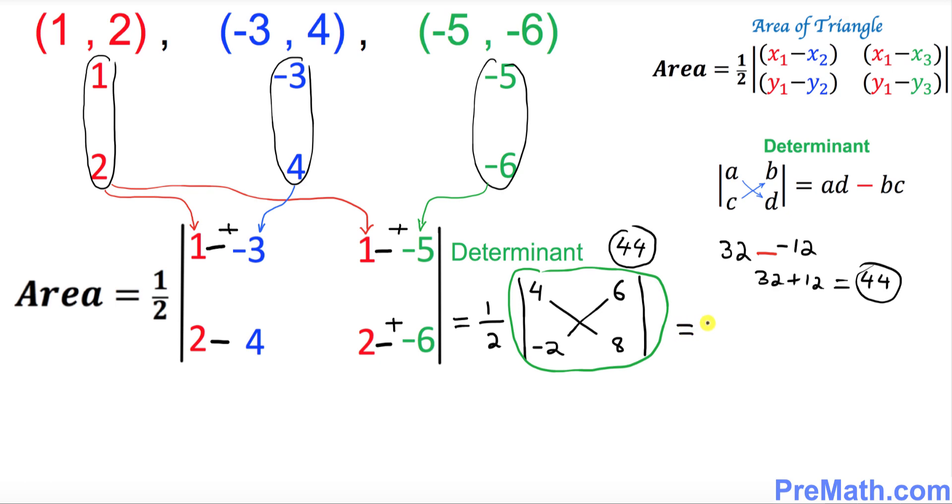And let's go ahead and simplify it. That's gonna be 1 over 2 times 44 equals to 22 is our answer. Thus, the area of the triangle turns out to be 22 square units. Thanks for watching and please subscribe to my channel for more exciting videos.